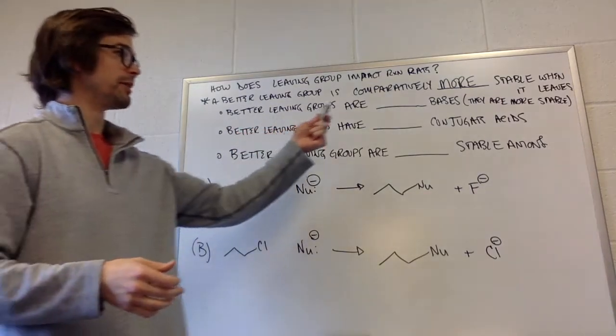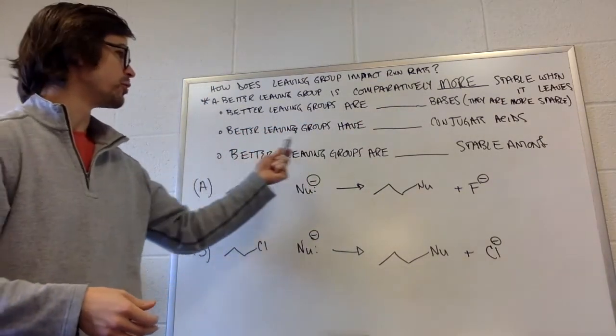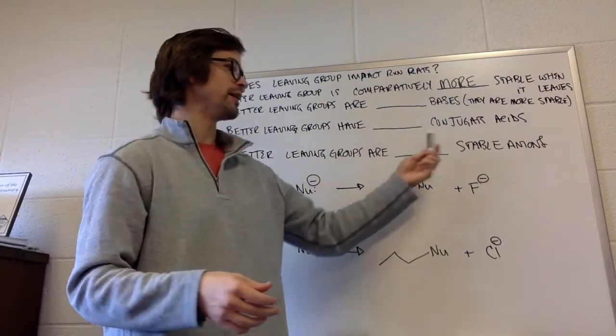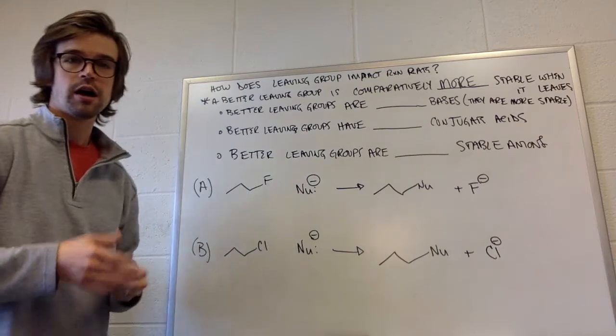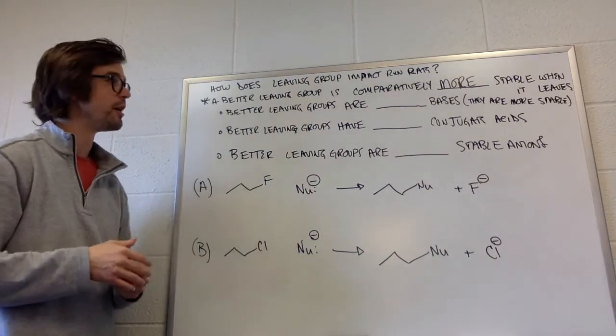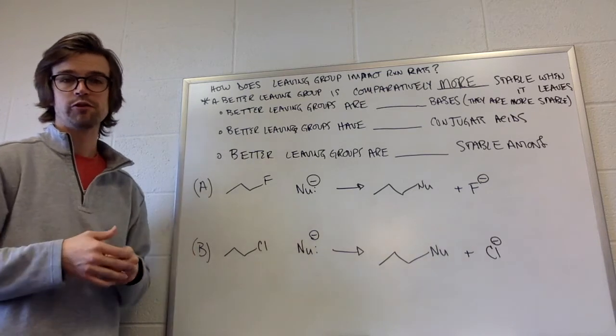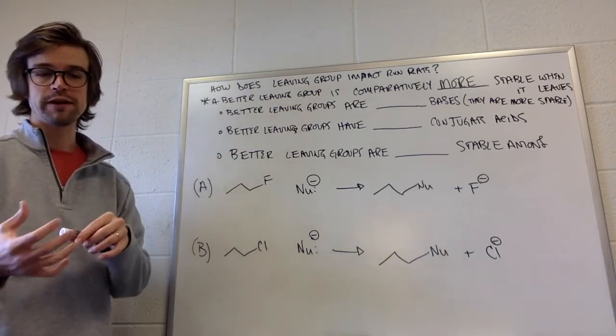Better leaving groups are blank bases. Better leaving groups have blank conjugate acids. Better leaving groups are blank stable anions. Go ahead and take a minute, pause the video, try and fill those in for yourself. Relate them to acid base chemistry and what we talked about with nucleophile strength.